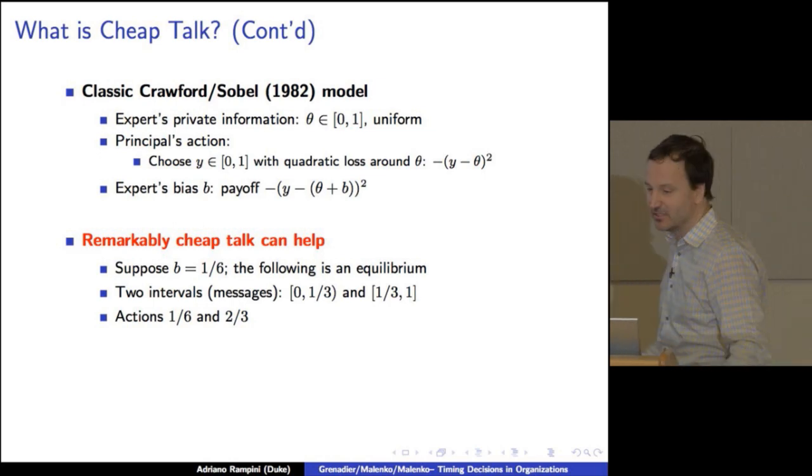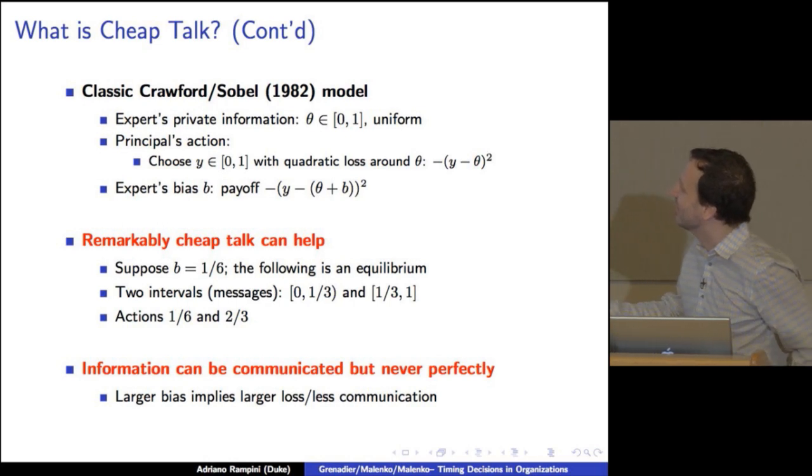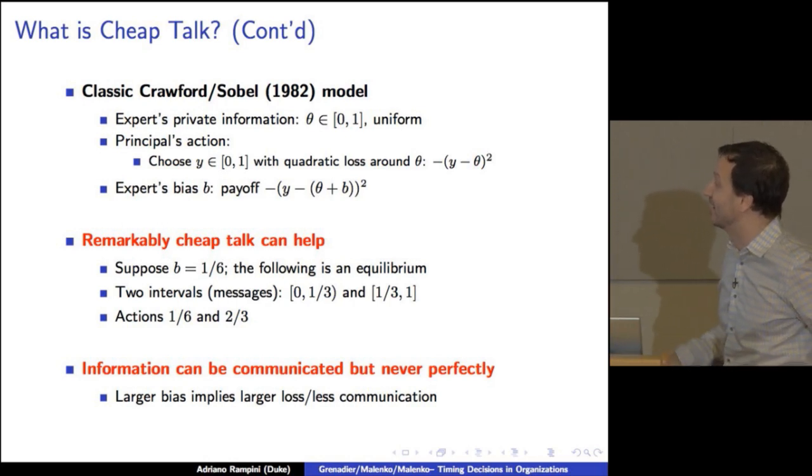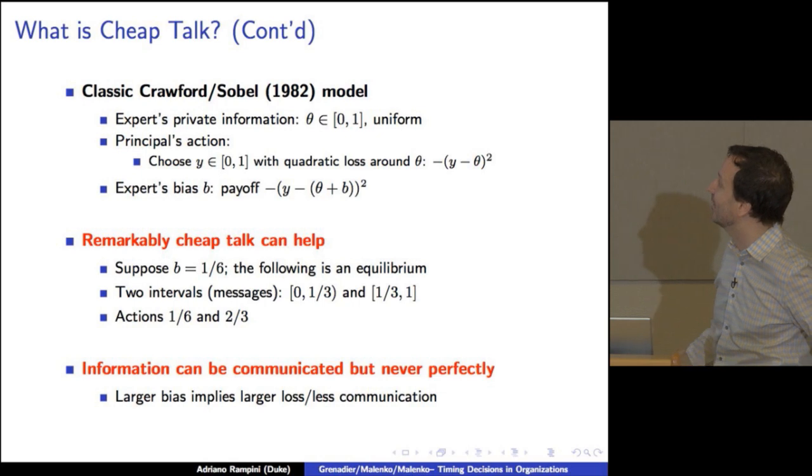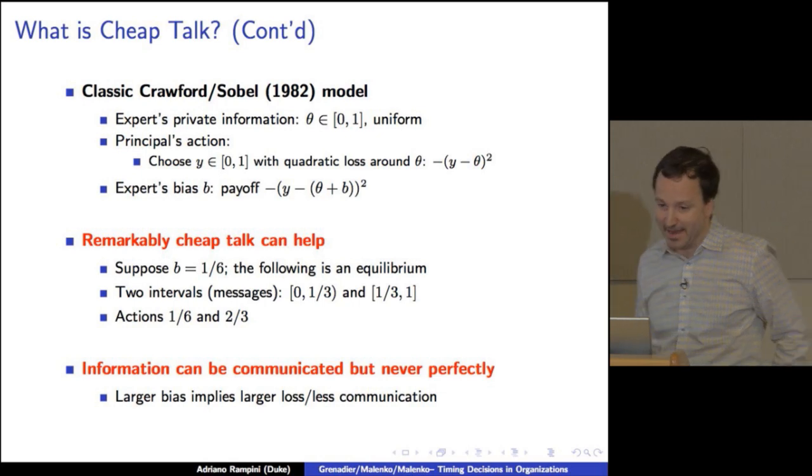Right? So remarkably, you can actually communicate. Now, what are the basic results? Information can be communicated, but never perfectly. And the larger the bias is, the less is communicated, so the larger the loss. Okay? So that's the standard setup. So keep that in mind.